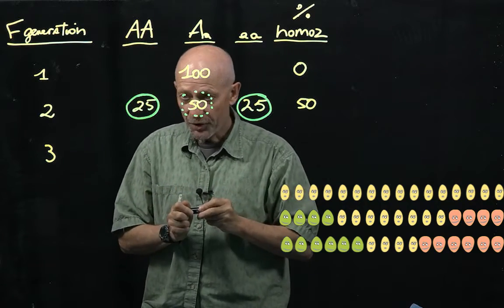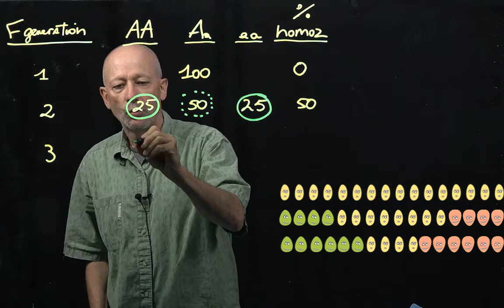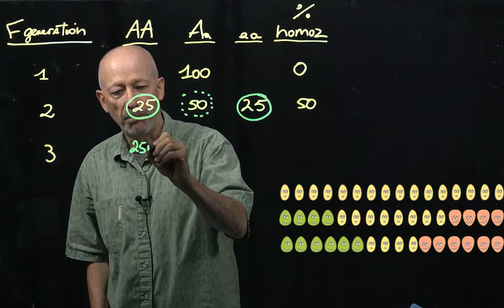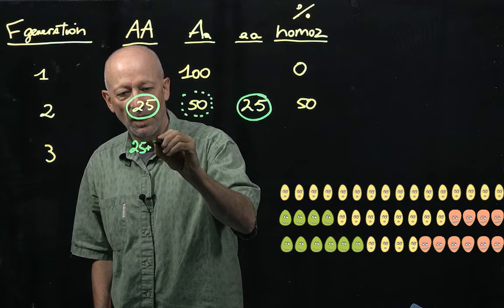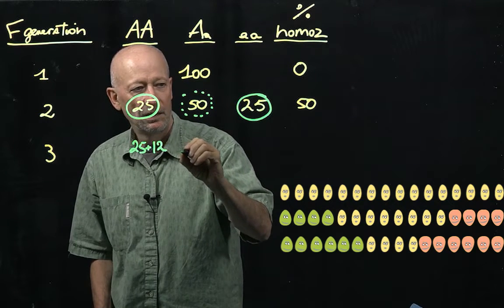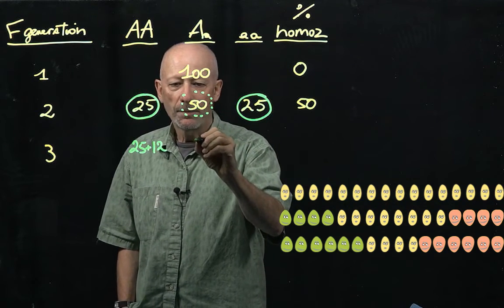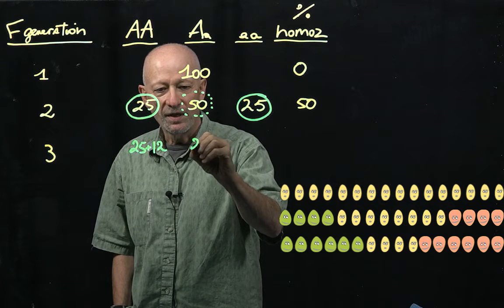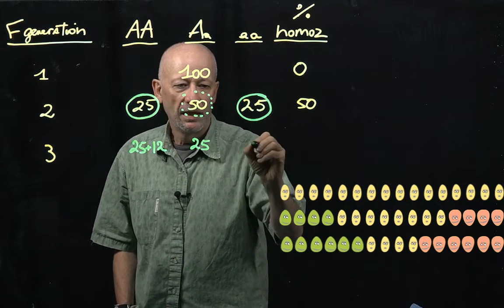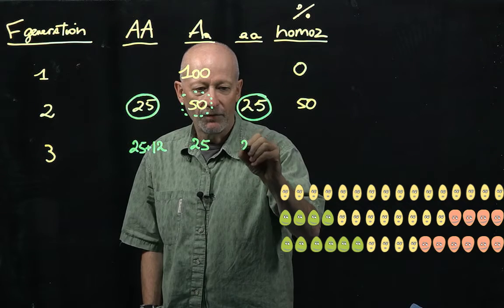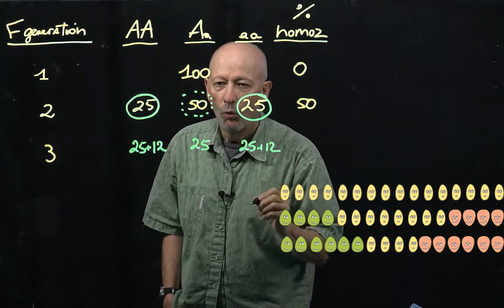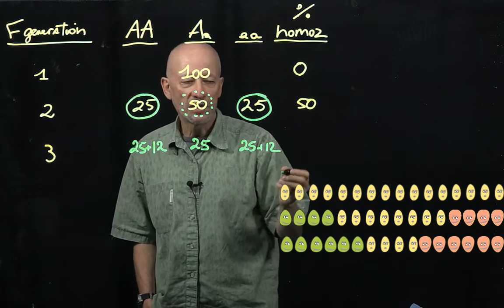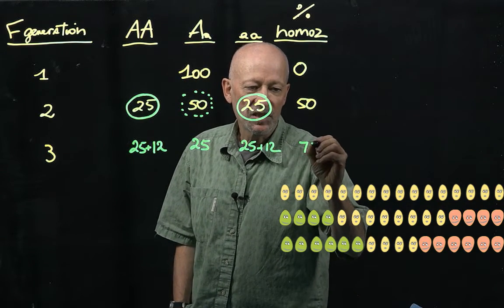So, my next generation is going to have 25 of these plants, plus one quarter of this, so it will be about 12. And over here, I will be left with about 25 of these plants. And over here, I go again and have 25 plants plus 12. What is the percent of homozygosity? It will be 75.